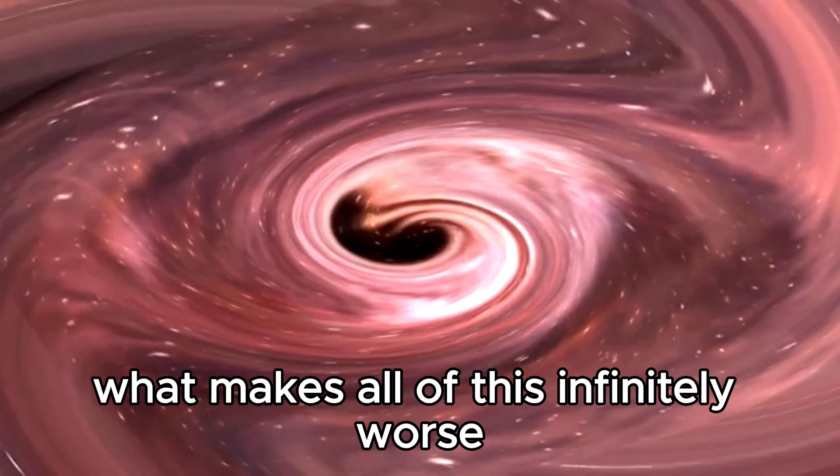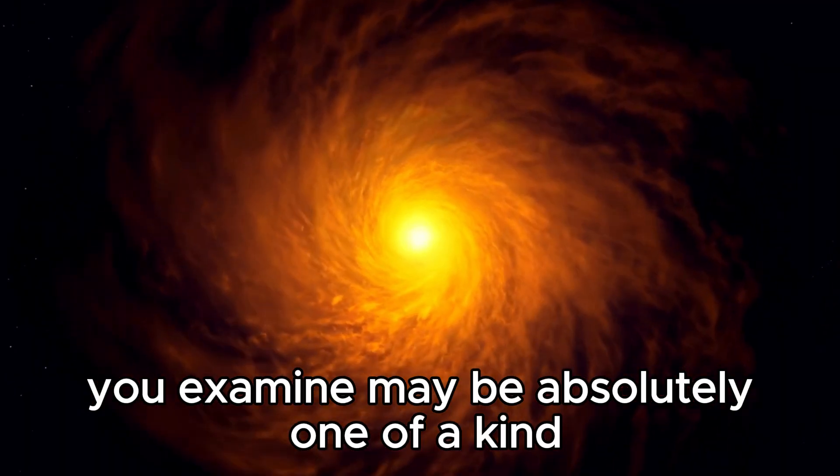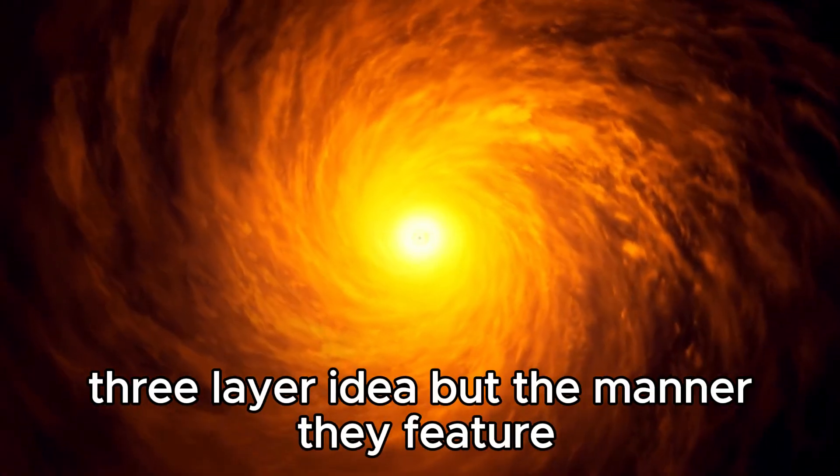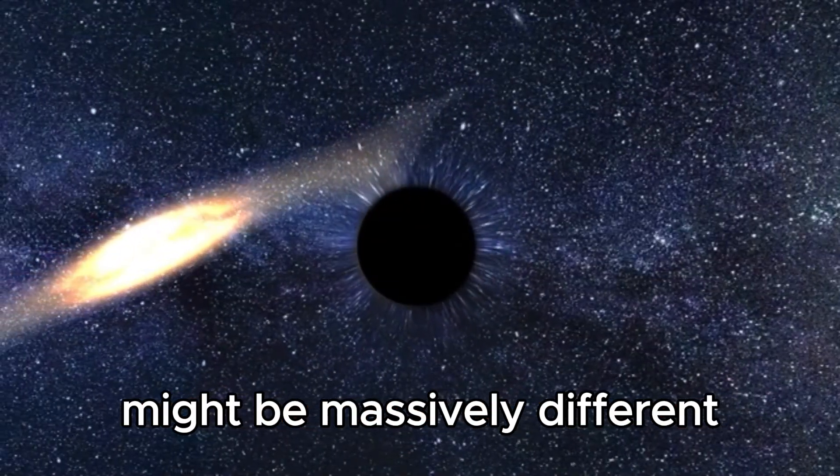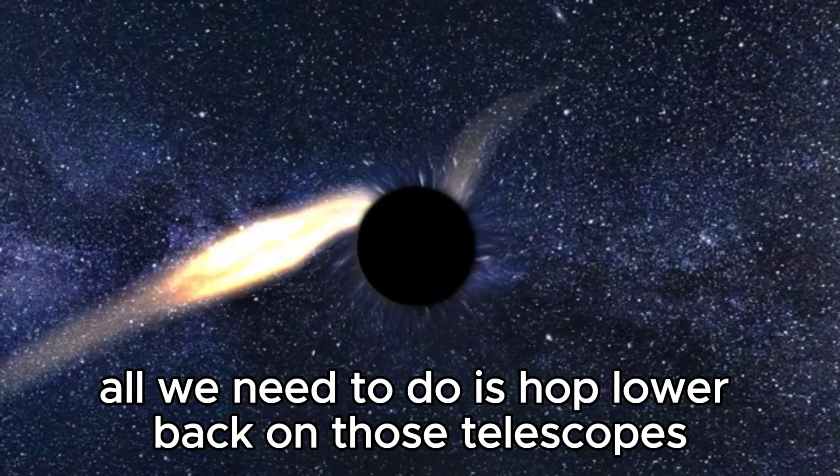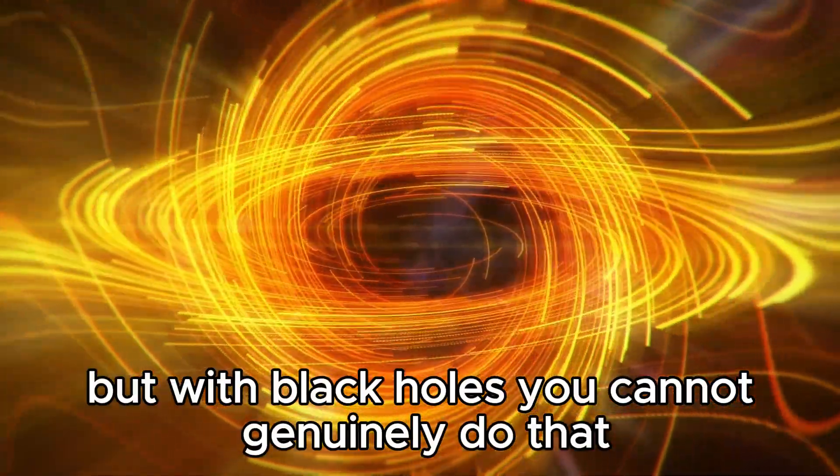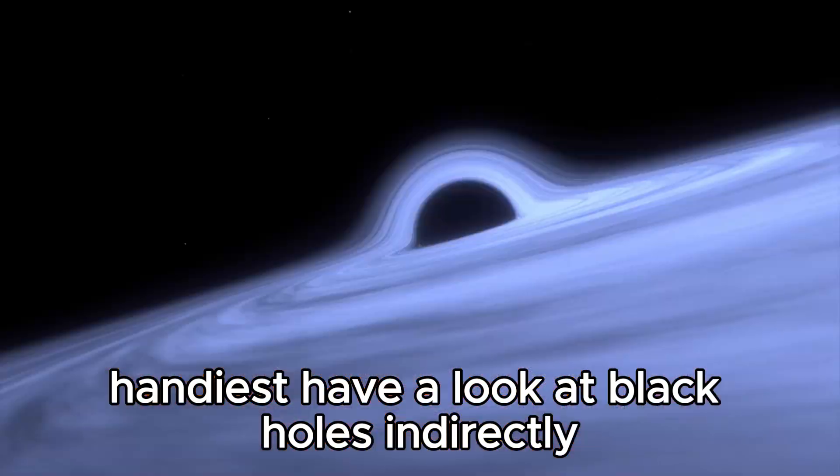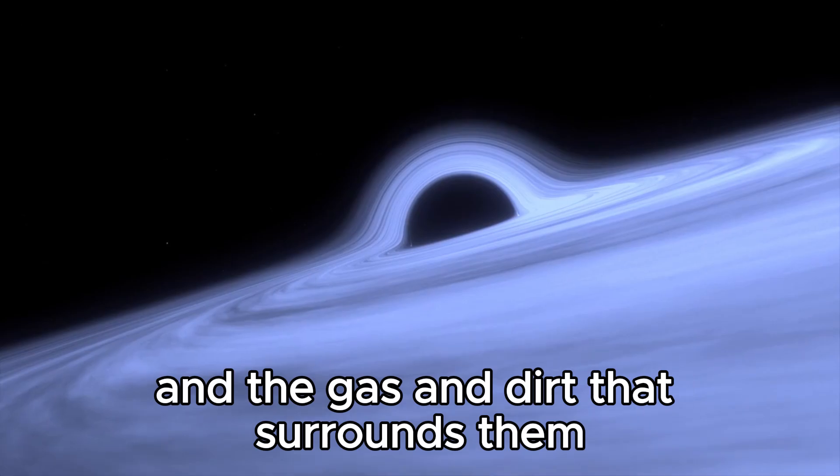Now, what makes all of this infinitely worse is the reality that every single black hole you examine may be completely different from the last. Sure, they do have a tendency to follow the same three-layer idea, but the way they function might be vastly different. Now, if this were anything else, all we need to do is hop back on those telescopes and just look at the problem at hand in detail. But with black holes, you cannot really do that. Scientists can only look at black holes indirectly by observing the radiation they emit and the gas and dust that surrounds them.